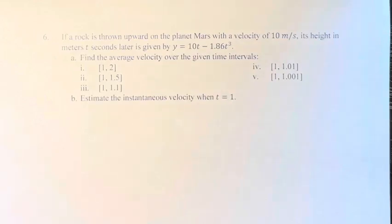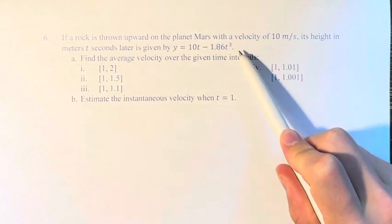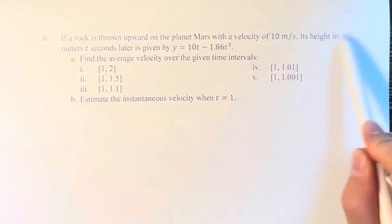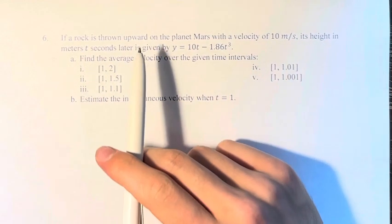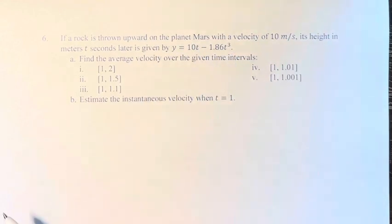Hello and welcome back to another video. In this problem we're told if a rock is thrown upward on the planet Mars with a velocity of 10 meters per second, its height in meters t seconds later is given by y equals 10t minus 1.86t cubed.